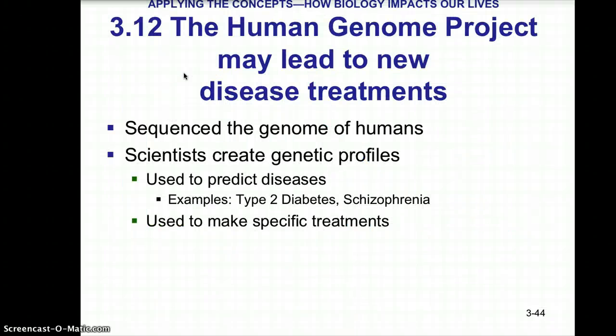The Human Genome Project sequenced the genome of humans and may lead to new disease treatments. Scientists created genetic profiles used to predict diseases such as type 2 diabetes and schizophrenia, and to make specific treatments. We will have a writing assignment activity related to the Human Genome Project and the discovery of the DNA molecule.